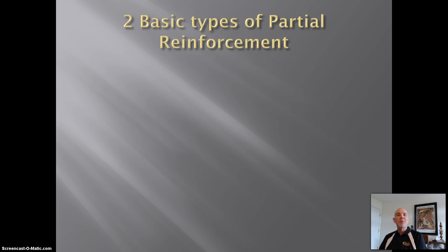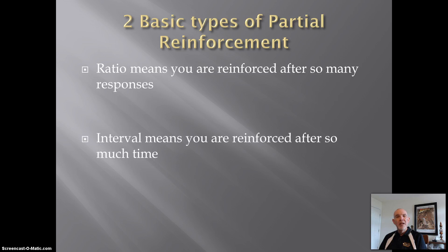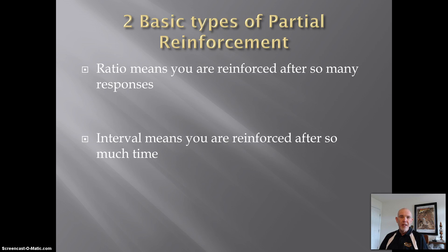We have two types of partial reinforcement. Ratio — when we reinforce the person after so many behaviors. And interval — when we reinforce a person after so much time has lapsed, whether they do anything or not.